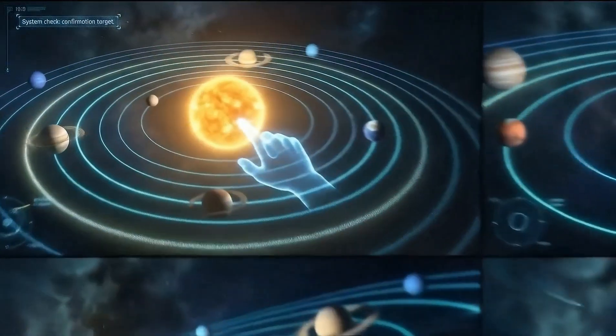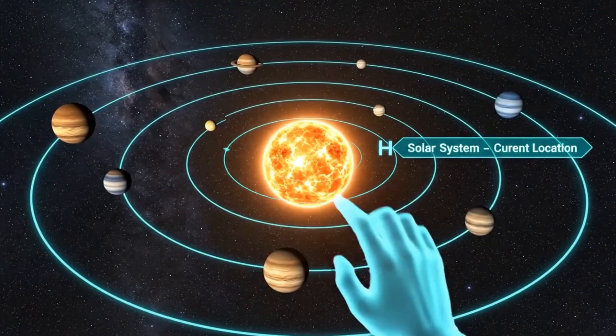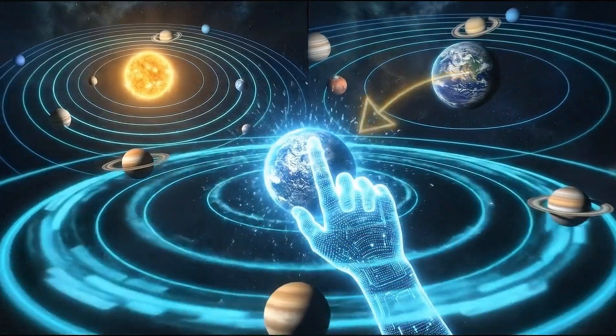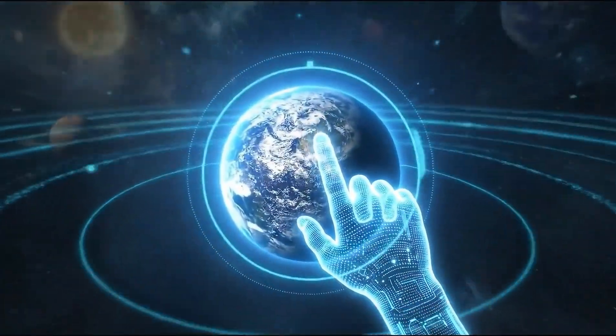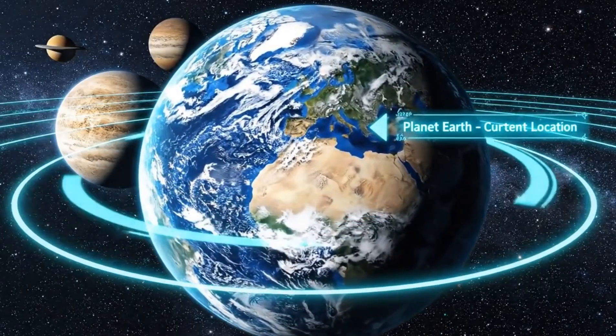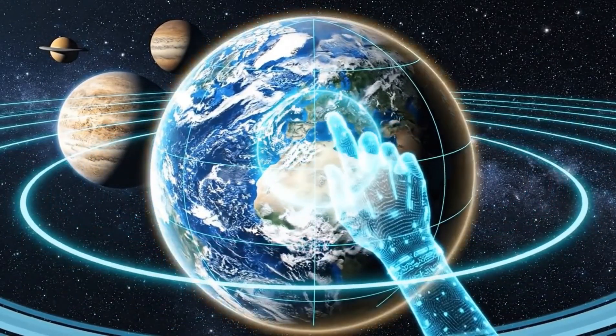System check. Confirmation target. Our local frame for all terrestrial scales. Home world confirmed. Preparing transition from planetary orbit to atmospheric boundary.